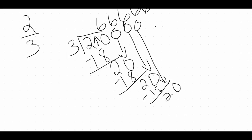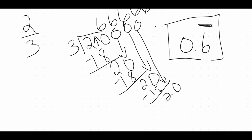Instead of writing 0.6666666 ongoing forever, there is a shorthand version — just write the 6, the part that repeats, and put a bar on top of it. A straight line over the part of the decimal that repeats signifies that it goes on forever. So in this example, the 6 goes on and on, so we put a bar over the 6, implying it's not just 0.6 but 0.66666 and so forth.